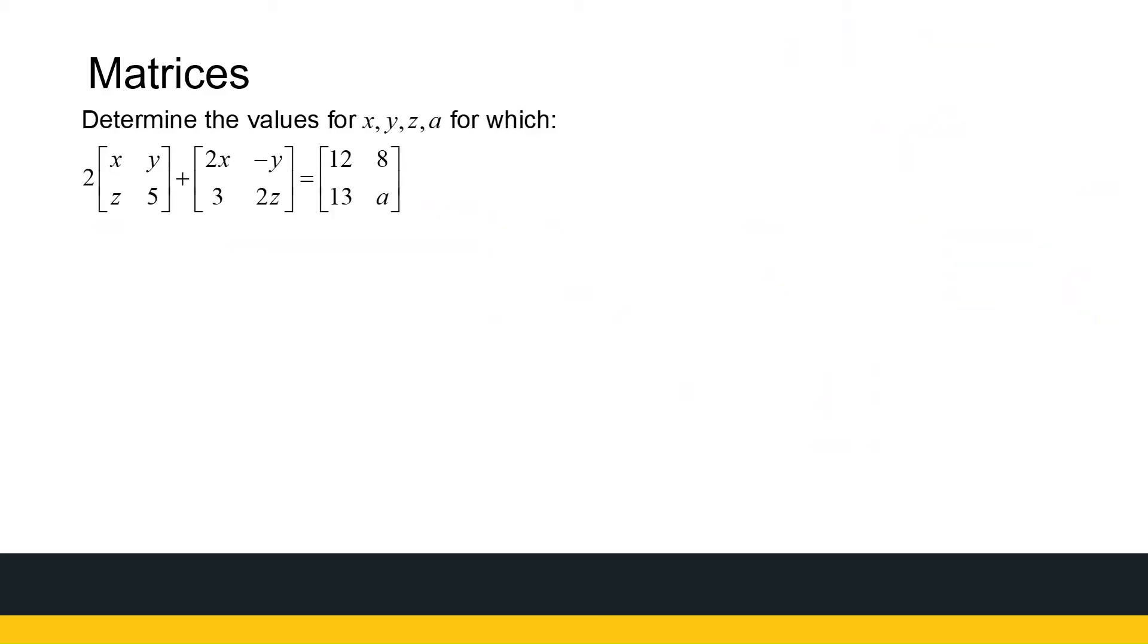All right. So here's a different type of question, looking at scalar multiples in addition, just to make sure we're happy with that. I'm giving you some equation. And I'm saying, well, here's some stuff. Find X, Y, Z, and A. All right. So we're just going to play with the left-hand side and with the right-hand side and see what we get. On the left-hand side, I've got 2X, 2Y, 2Z, 2 times 5 is 10. All right. Plus 2X minus Y, 3, 2Z. So that's my left-hand side. Let's simplify it. We can add those matrices.